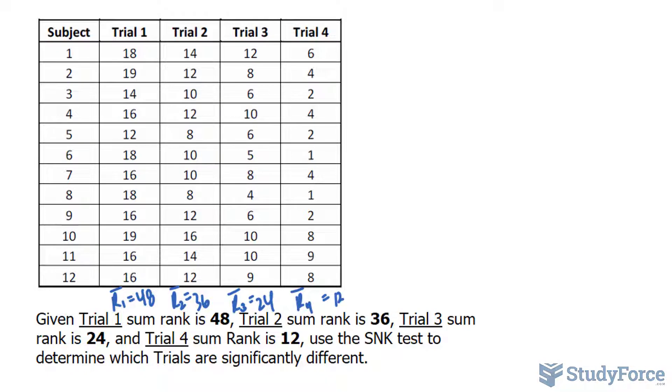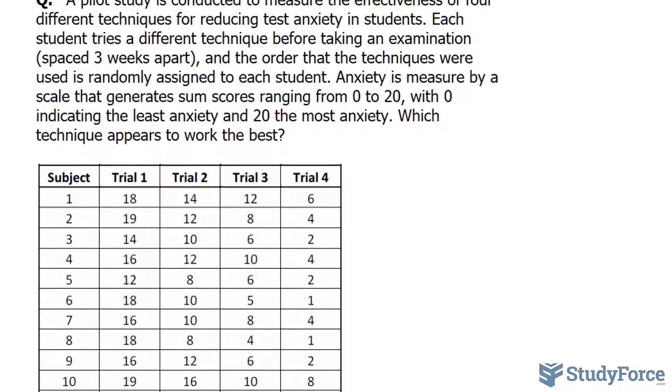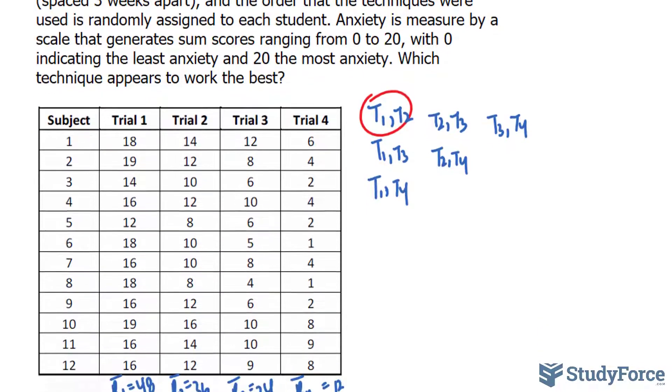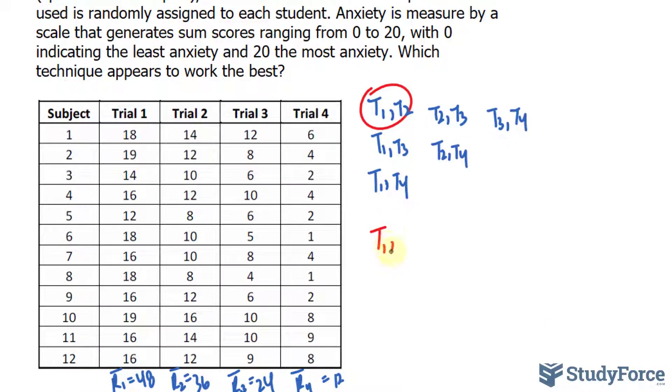We will be performing the SNK technique, the Student-Newman-Keuls test, to determine which trials are significantly different. Let's begin by comparing T1 and T2. Remember, you have to do several comparisons here: T1 and T2, T1 with T3, T1 and T4, then T2 and T3, T2 and T4, and lastly T3 and T4. So six times you have to perform this test, and we'll begin with the very first one, T1 and T2.